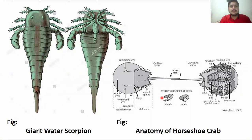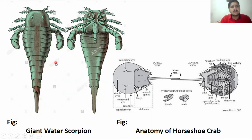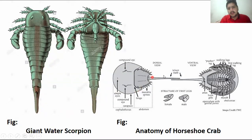In the last diagram we can see the giant water scorpions alongside the horseshoe crab. Giant water scorpions are now extinct. The diagram shows leg pairs, the head region, the abdominal region with its tegmata, and the last tail section called the telson.